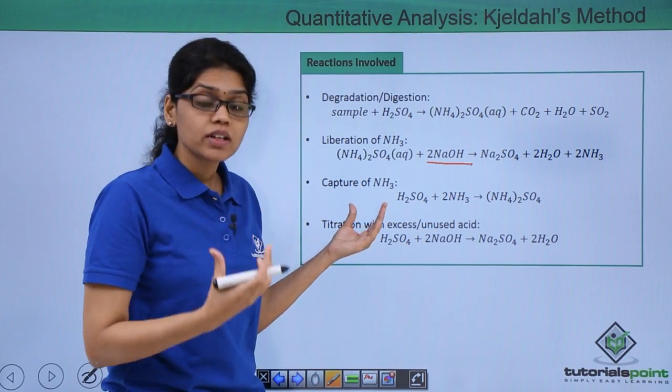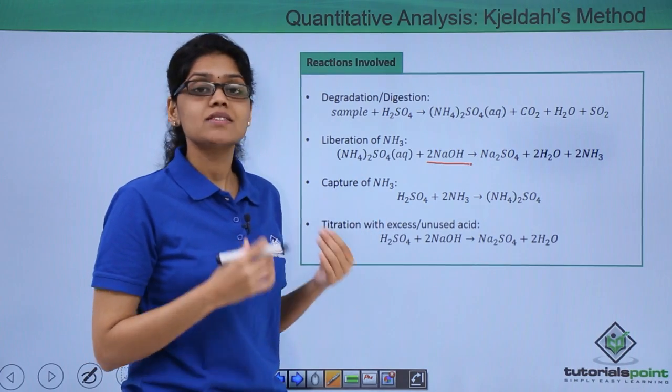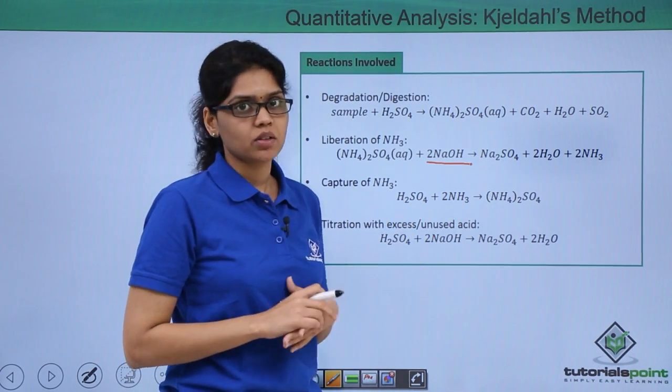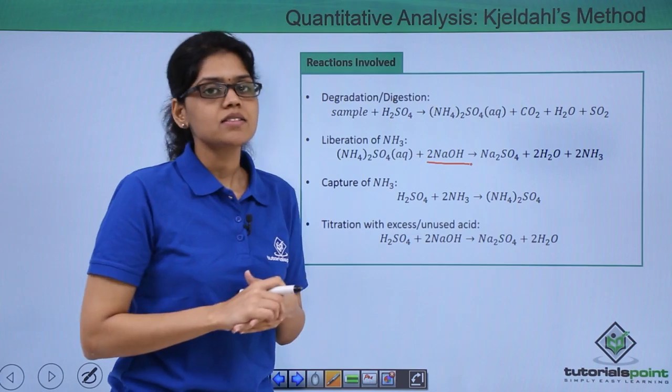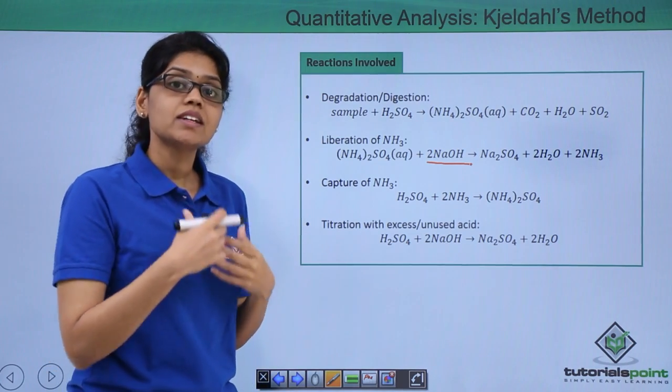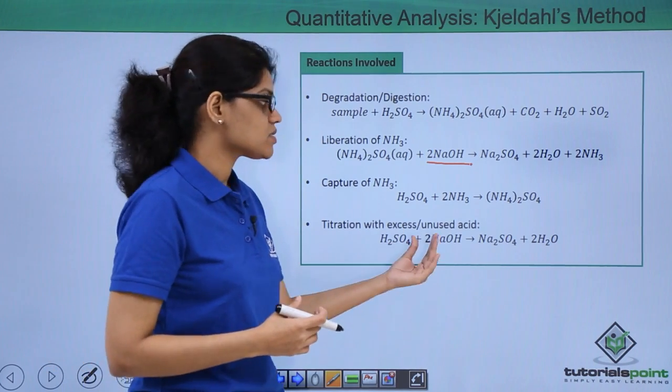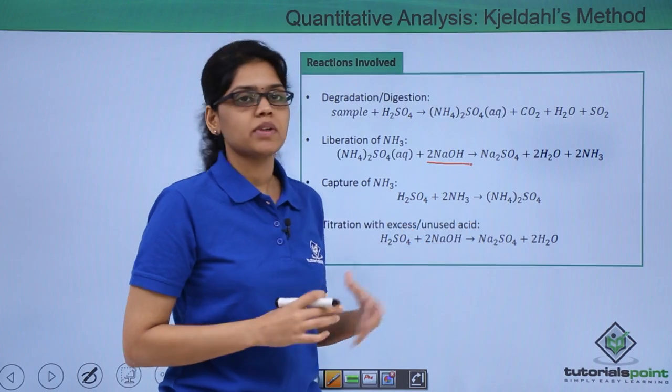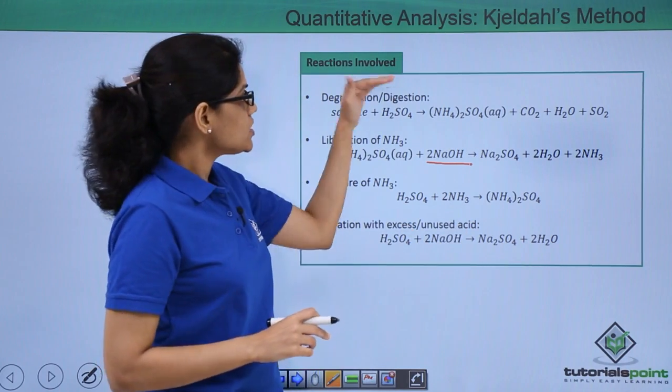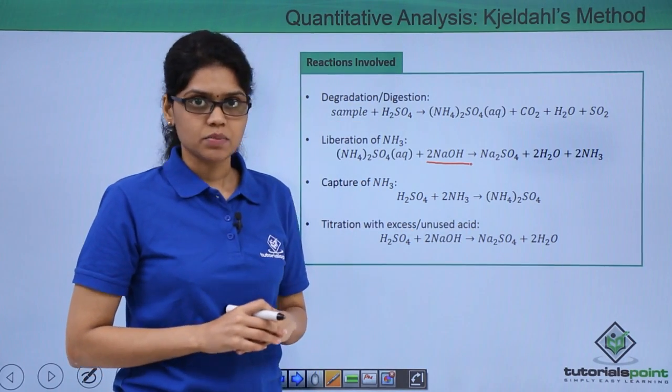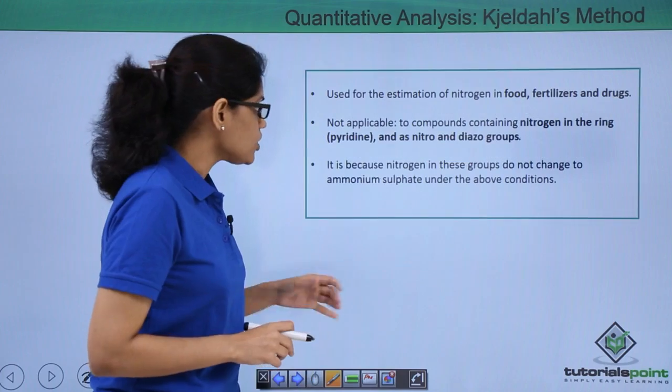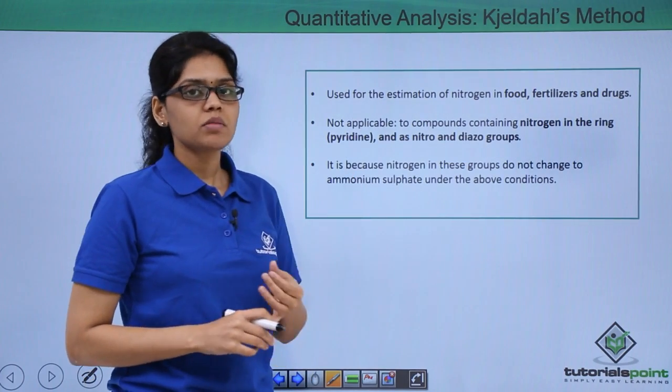In the third step, we are capturing ammonia by reacting it with standard H2SO4 according to this reaction. The last step is titration where we are reacting the leftover acid with excess of NaOH. So these are the various reactions involved in Kjeldahl's method.